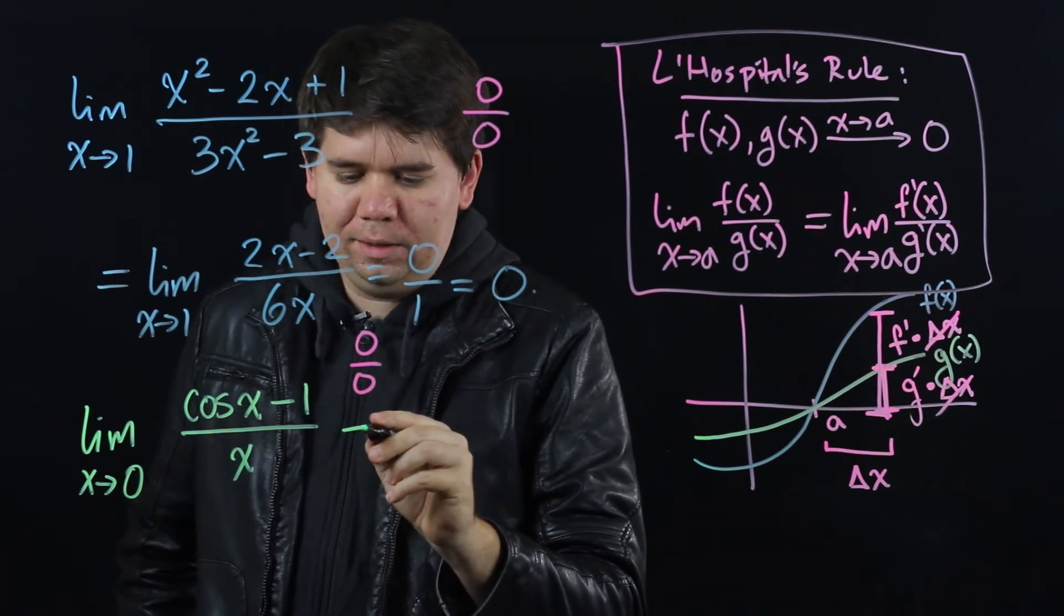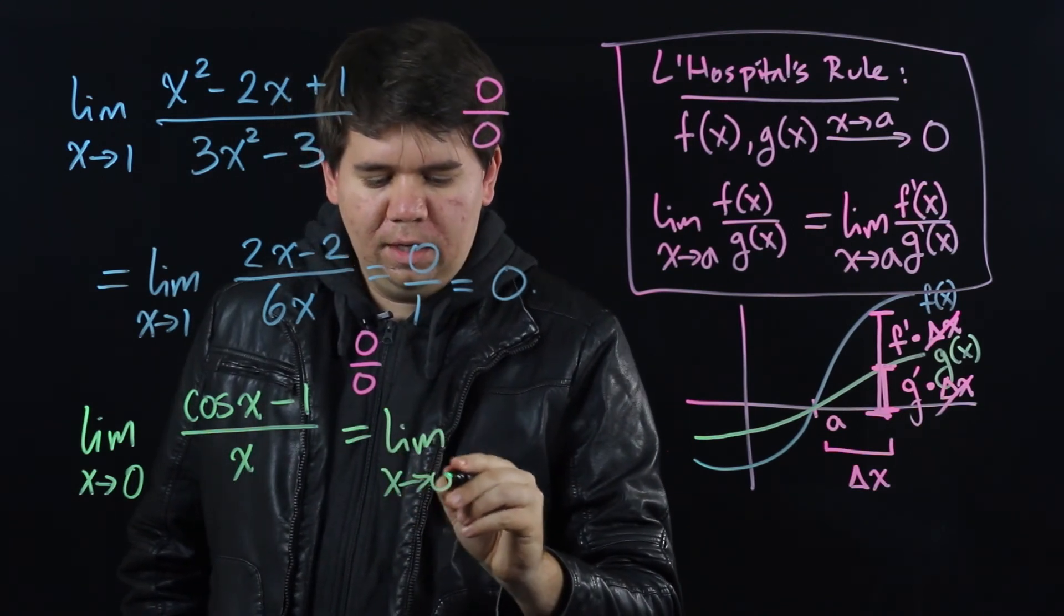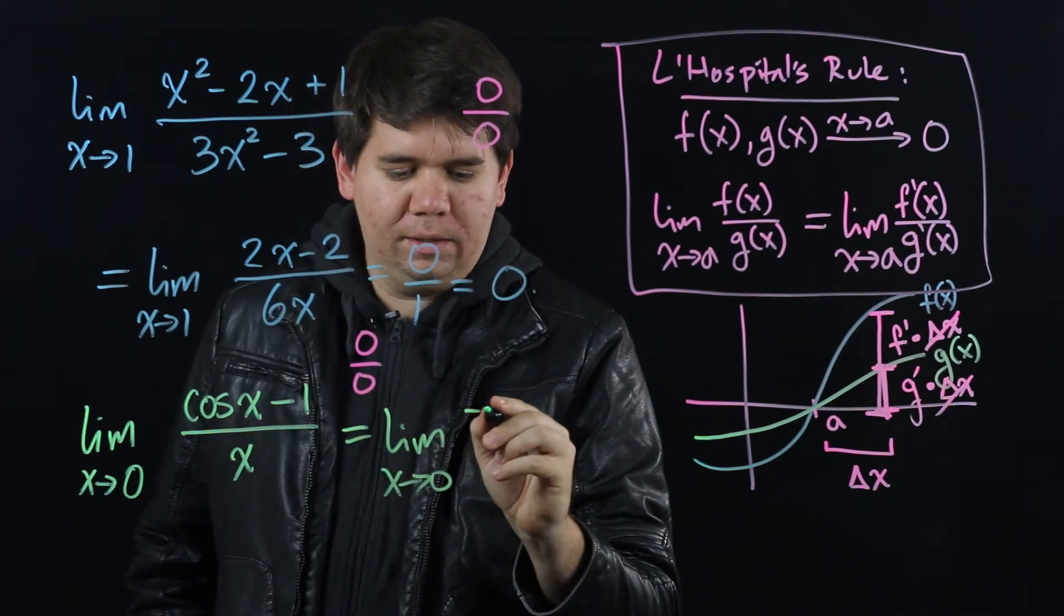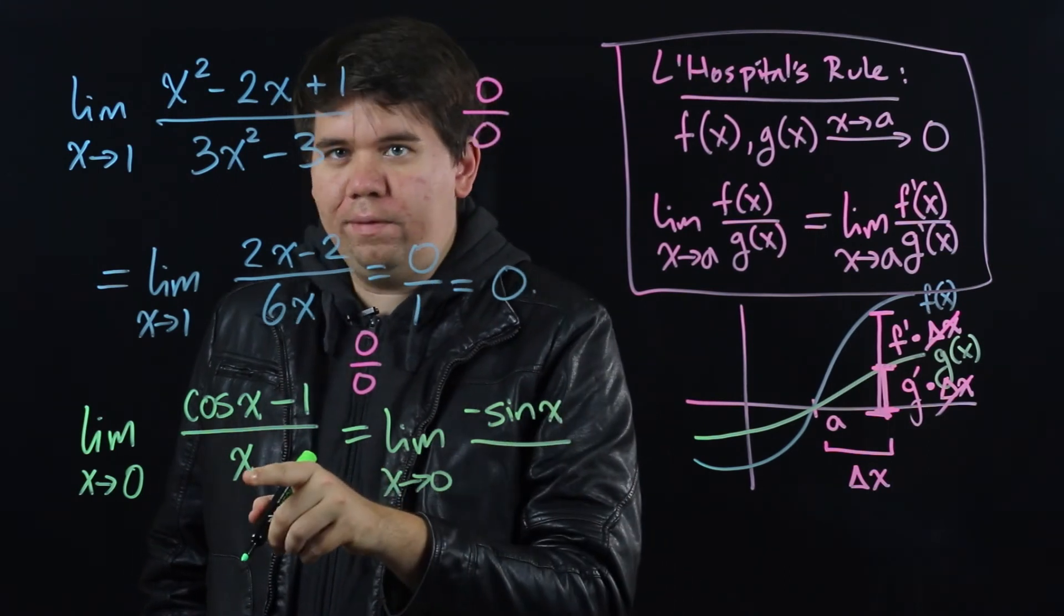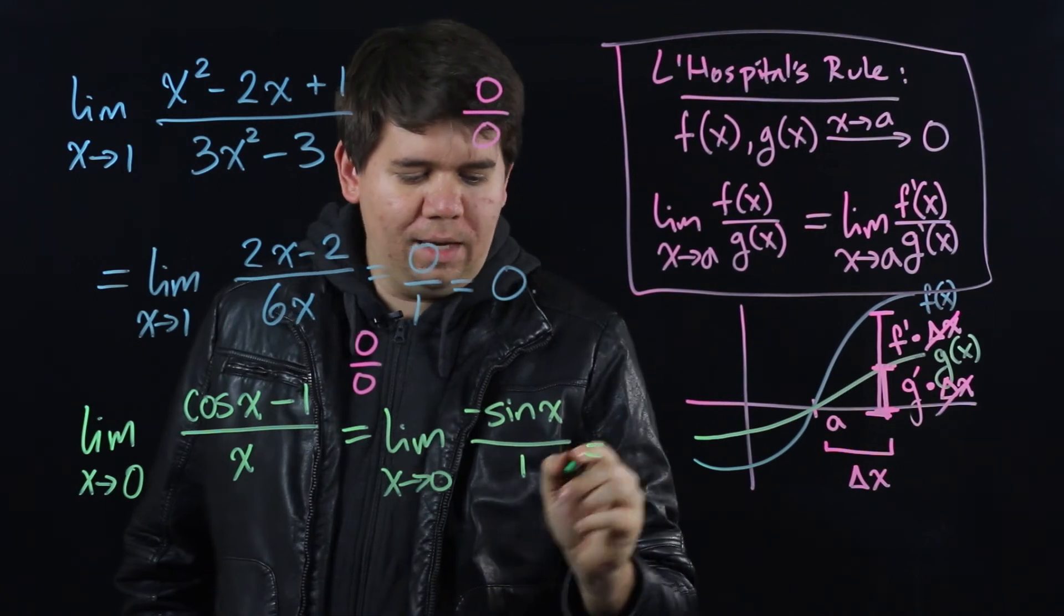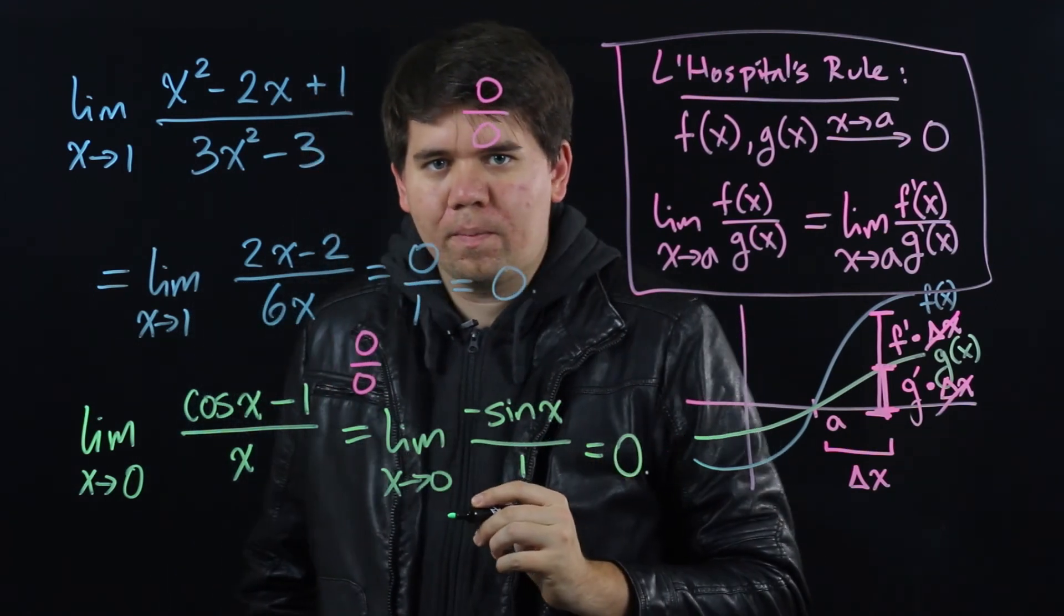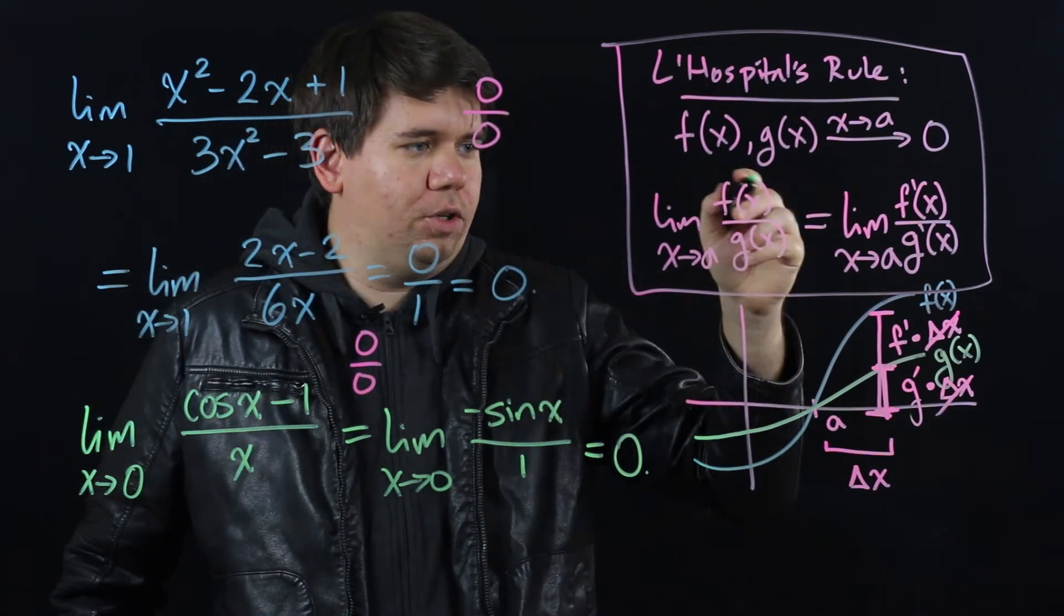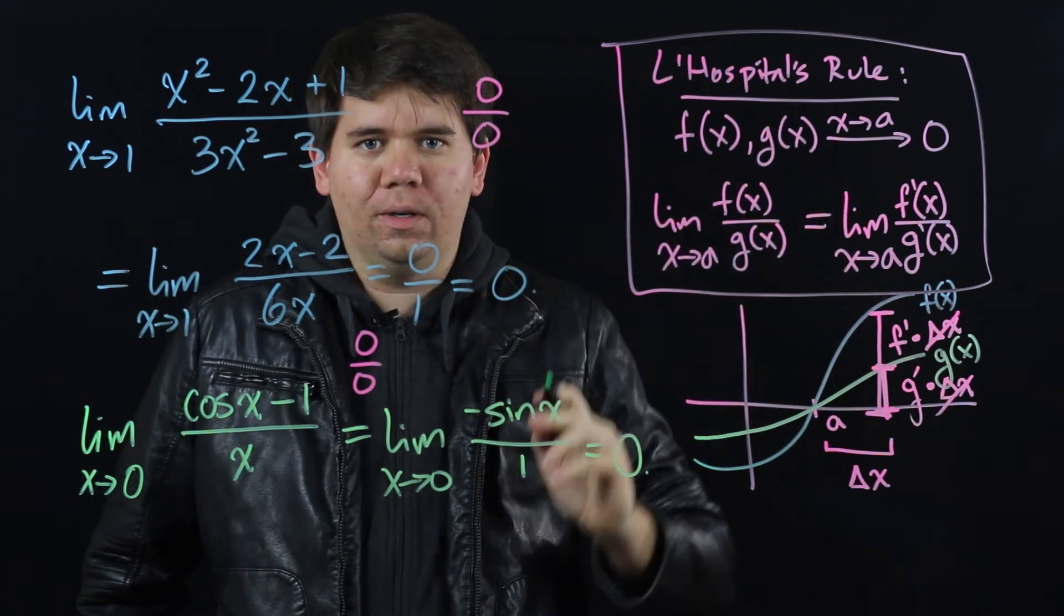L'Hopital's rule then says this limit will just be the limit of the derivative of the top—the derivative of cos is minus sin of x—over the derivative of the bottom. The derivative of x is 1. Now taking the limit as x goes to 0, we get 0. In general, whenever your function is some quotient of two functions, the top and bottom both going to 0, we can apply L'Hopital's rule.